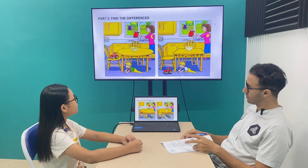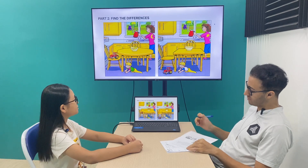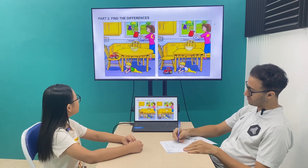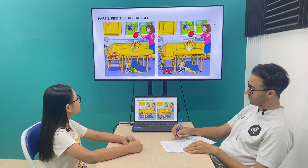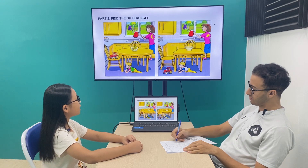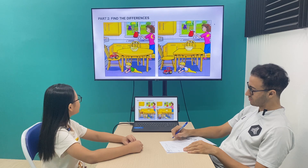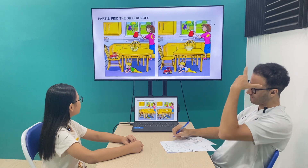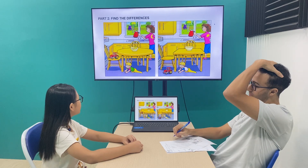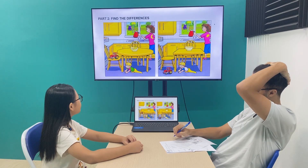Now, can you find the differences between the two pictures? In picture one, the table is round, but in picture two it is square. In picture one, the mom's shirt has a moon, but in picture two the mom's shirt has a star. Very good!